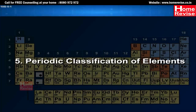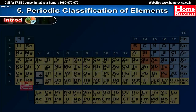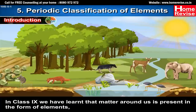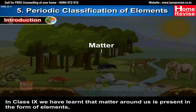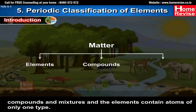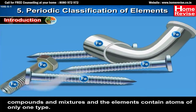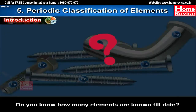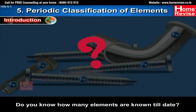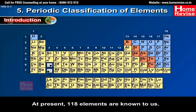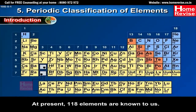Chapter 5: Periodic Classification of Elements. In class 9th, we learnt that matter around us is present in the form of elements, compounds and mixtures, and that elements contain atoms of only one type. At present, 118 elements are known to us.